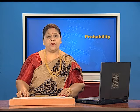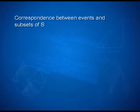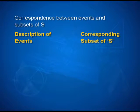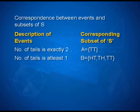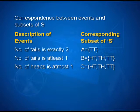Similarly, we find the following correspondence between events and subsets of S. We have description of the event and the corresponding subset of the sample space S. Number of tails is exactly 2: A = {TT}. For number of tails is at least 1: B = {HT, TH, TT}. Number of heads is at most 1: the corresponding subset is {HH, HT, TH, TT}.